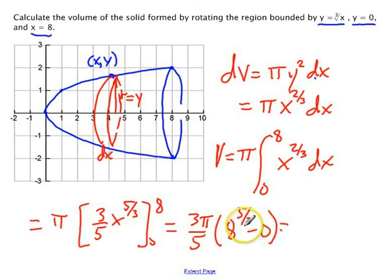which is equal to 3 pi over 5 times 8 to the 5 thirds minus 0. And the cube root of 8 is 2, 2 to the 5th is 32, 32 times 3 is 96. And our final answer is 96 pi over 5, and that's cubic units.